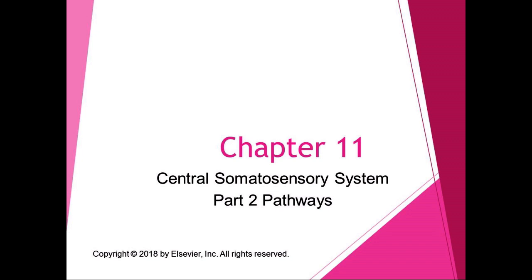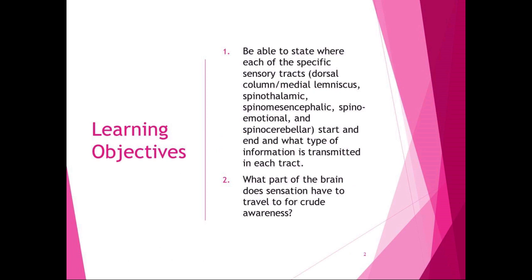We talked about the conscious relay pathways, and now we're going to talk about the divergent and non-conscious relay pathways — same learning objectives, same PowerPoint. We talked about the dorsal column medial lemniscus and the spinothalamic pathway: where they start and end and what type of information is transmitted. The DCML goes from the spinal cord to the medulla, onto the thalamus and the cerebral cortex, and it transmits light touch, discriminative touch, and conscious proprioception.